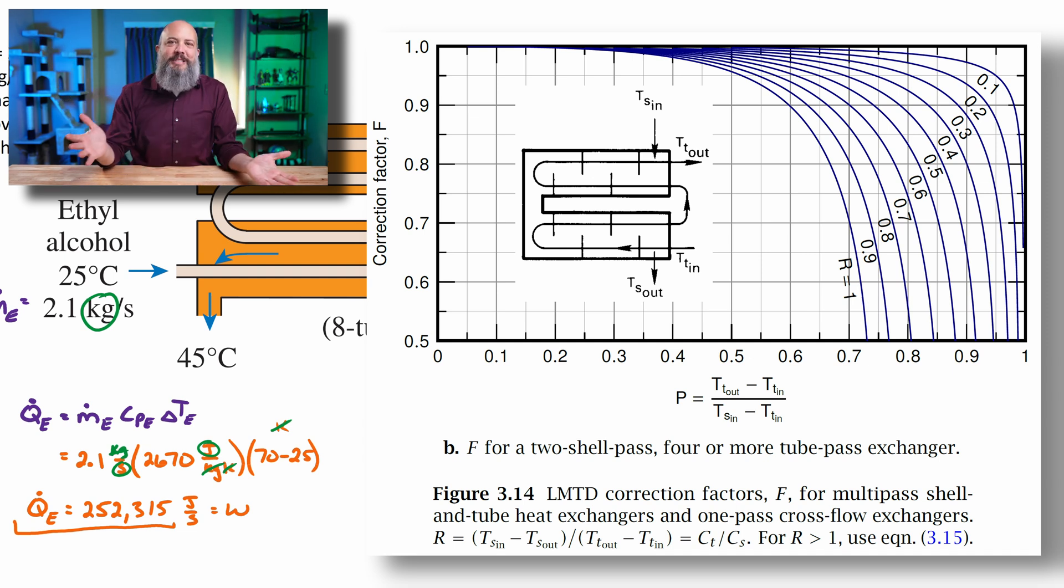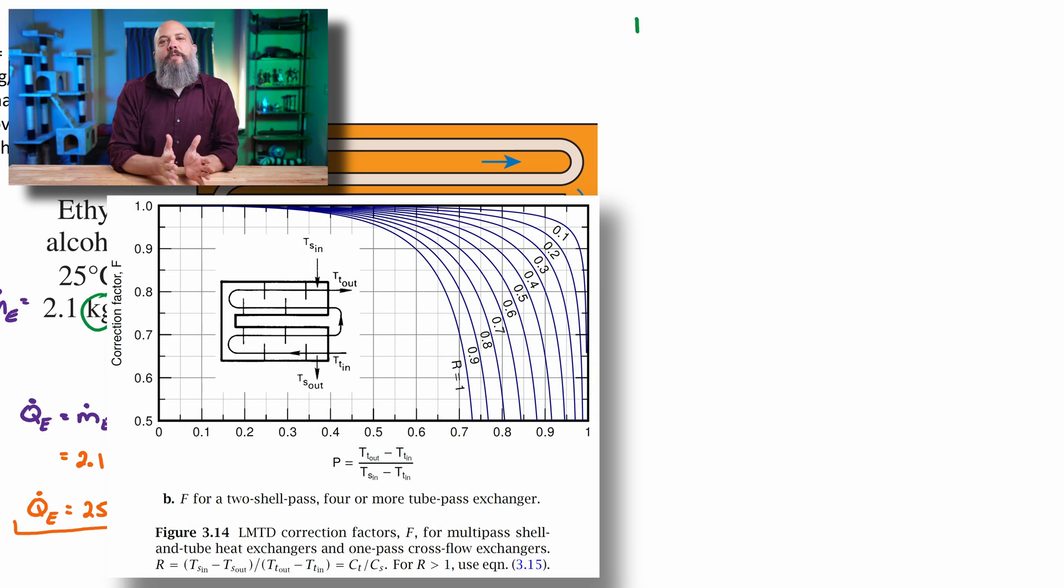So to look up F on these figures, I have to calculate these values P and R, something for the horizontal axis. And then there's all these different lines, like which line am I actually looking at?